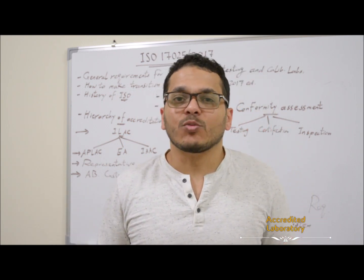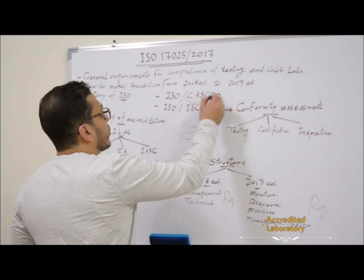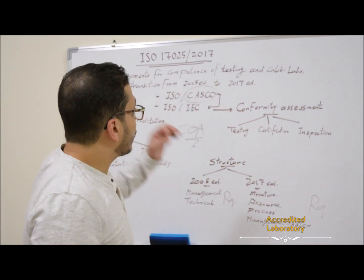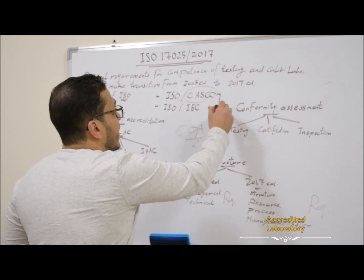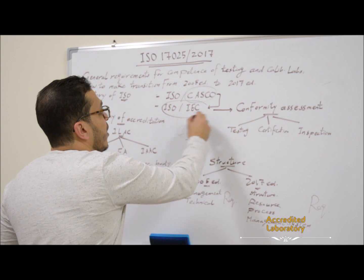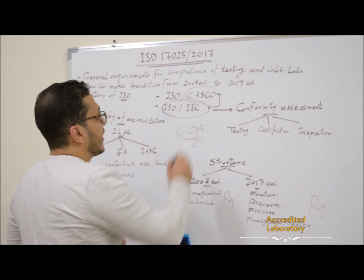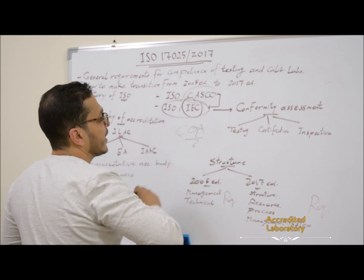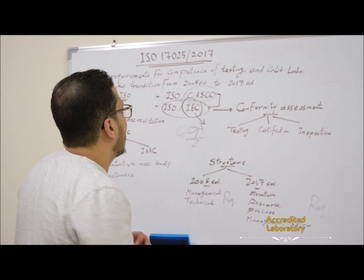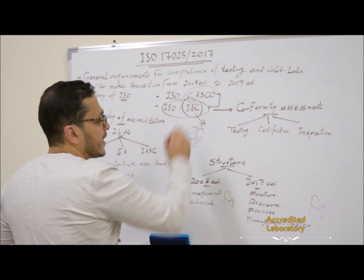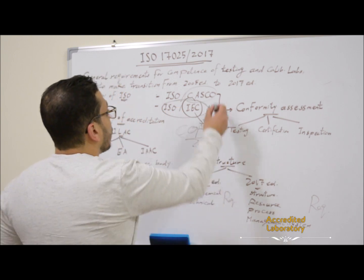Who is responsible to prepare and publish these standards? The ISO Technical Committee responsible for conformity assessment is the ISO CASCO group. They are responsible to prepare and publish these standards and circulate them for voting to ISO and IEC — the International Electrochemical Commission. ISO and IEC developed a joint field in conformity assessment.